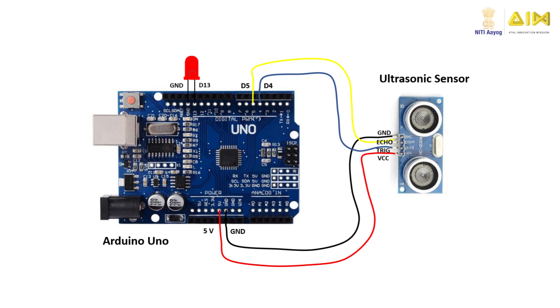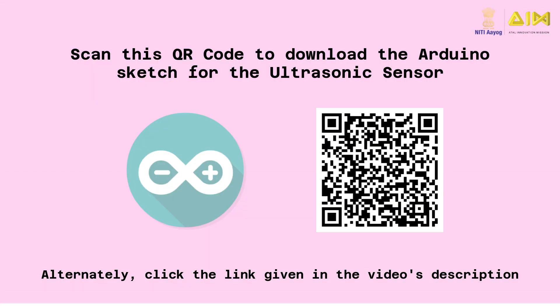Here's how you can connect an ultrasonic sensor to an Arduino board. Start by connecting the VCC and ground pins of the sensor to the 5 volts and ground pins on the Arduino board. Connect the trigger and echo pins of the sensor to any two data pins on the Arduino board, such as D4 and D5. Lastly, connect an LED between pin 13 and ground on the Arduino board. Scan this QR code to download the Arduino sketch for the ultrasonic sensor and upload it to the Arduino board.